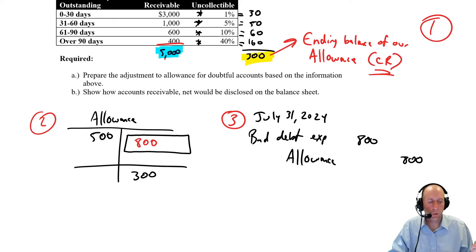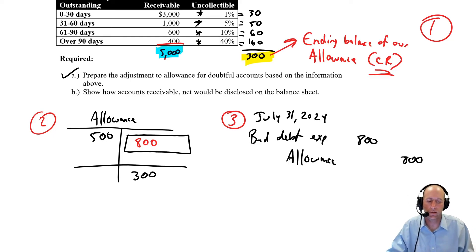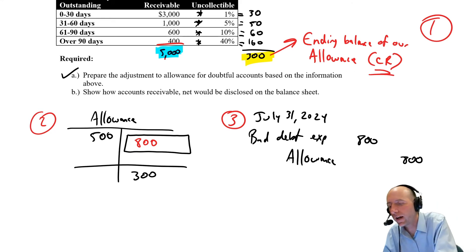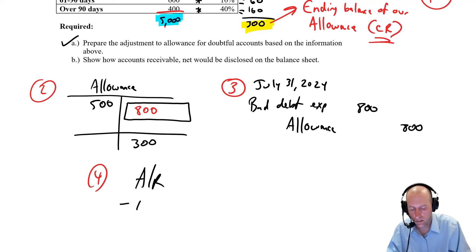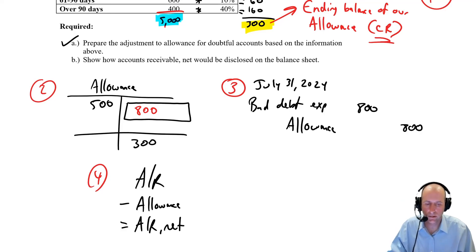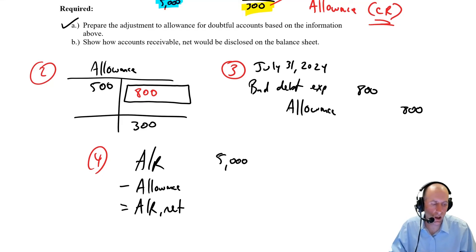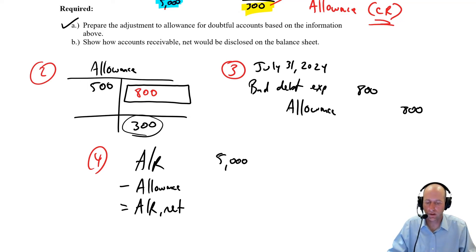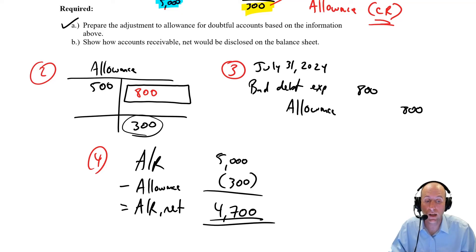We've completed our adjustment — that was part A. Now the final step: show how accounts receivable would be disclosed on the balance sheet. The formula is AR minus allowance equals net AR. Our accounts receivable is $5,000. The allowance is the ending T-account balance of $300 — not the $800 journal entry amount. $5,000 minus $300 equals $4,700 net accounts receivable.